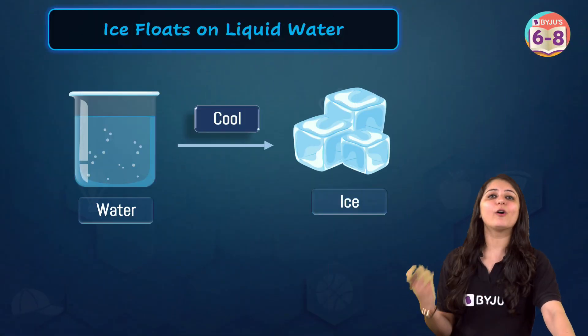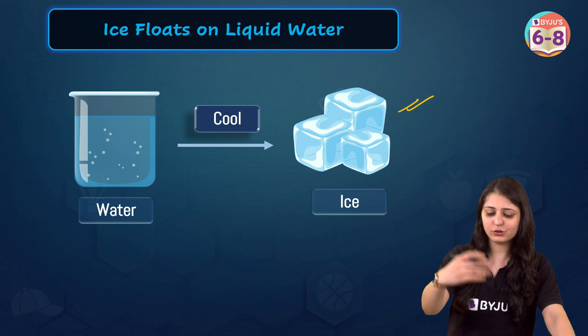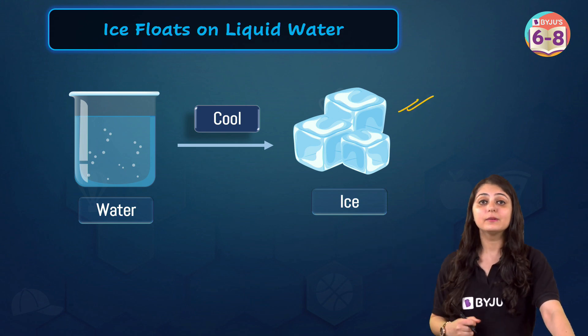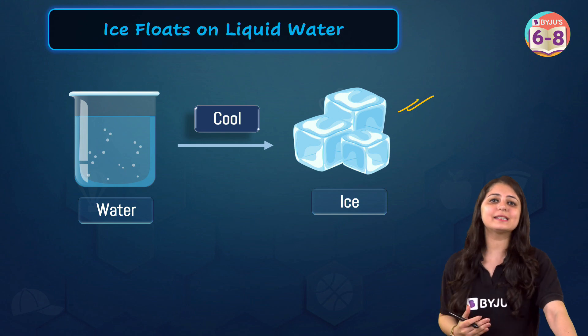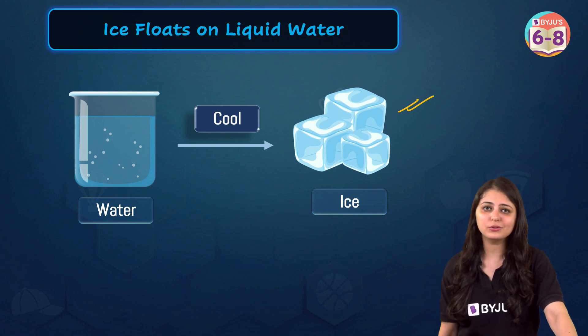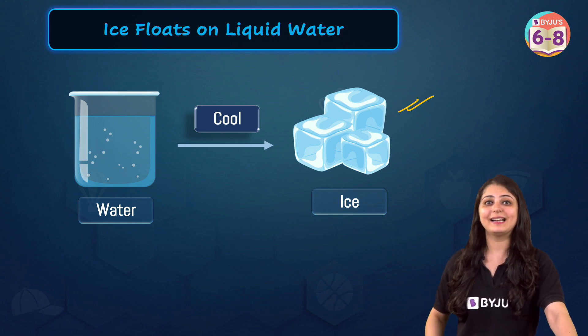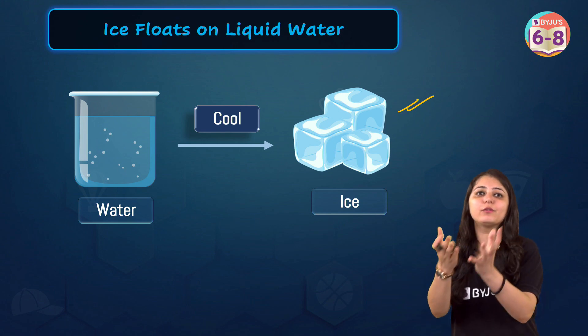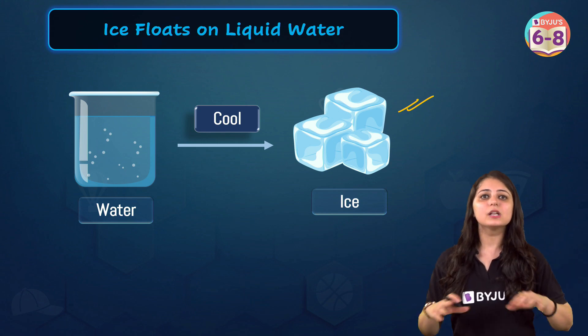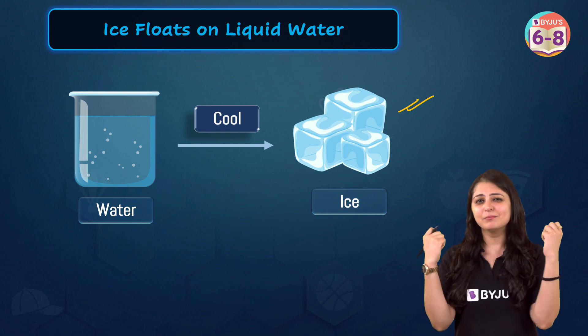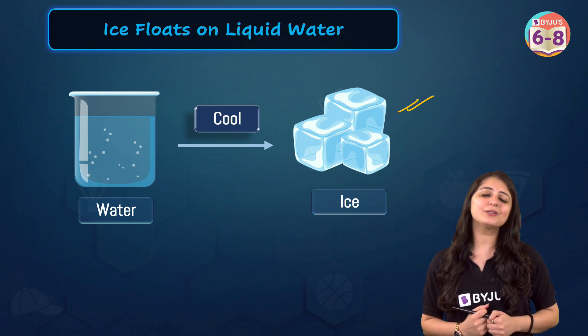Ice is water frozen into a solid state. When the temperature drops to 0 degrees Celsius, water is converted into ice. You would think that as liquid water starts to freeze, the molecules would just pack together more closely. But that's not what happens.